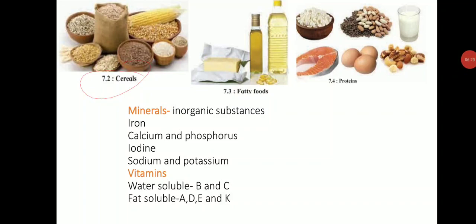The next group is fats. Some part of our energy requirement is also fulfilled by fatty acids. Fatty foods include oil, ghee, and butter — these are sources of fatty acids. The energy we get from food is in the form of heat, measured in kilocalories. For children of growing age, approximately 2,500 calories should be consumed daily from food.